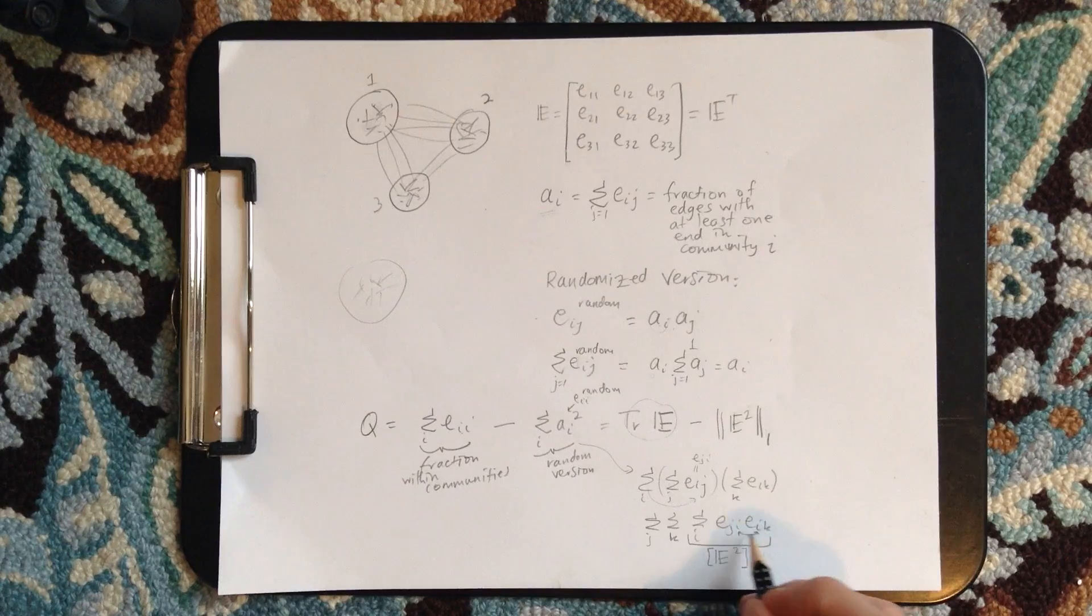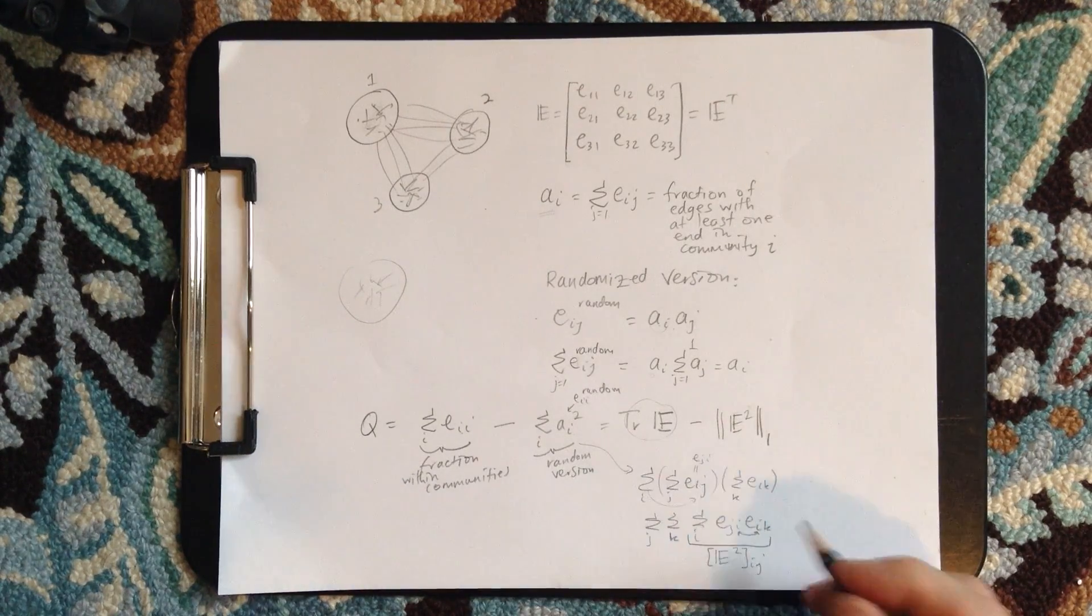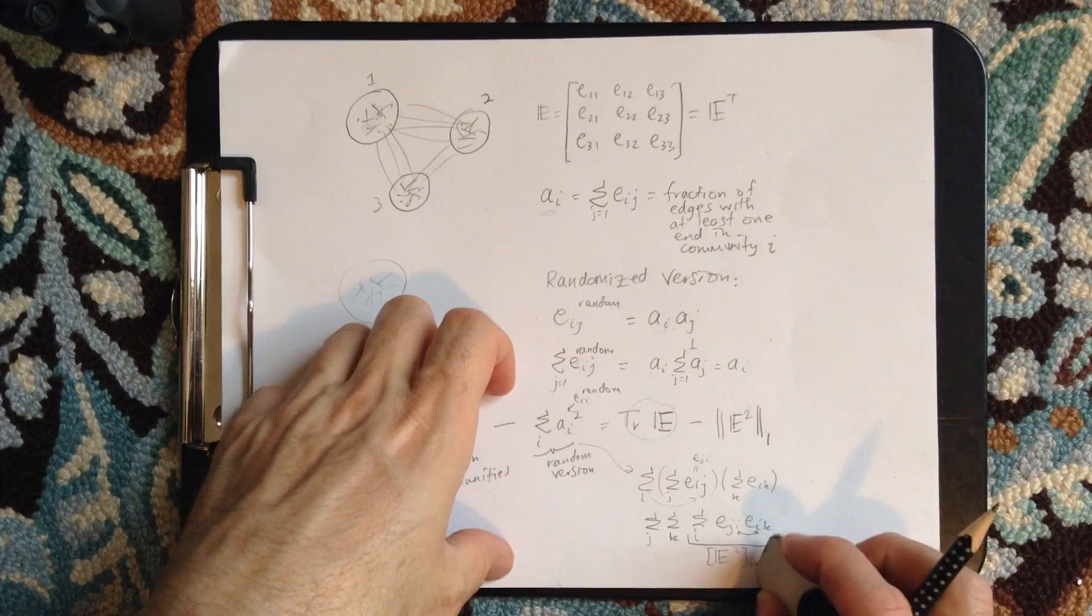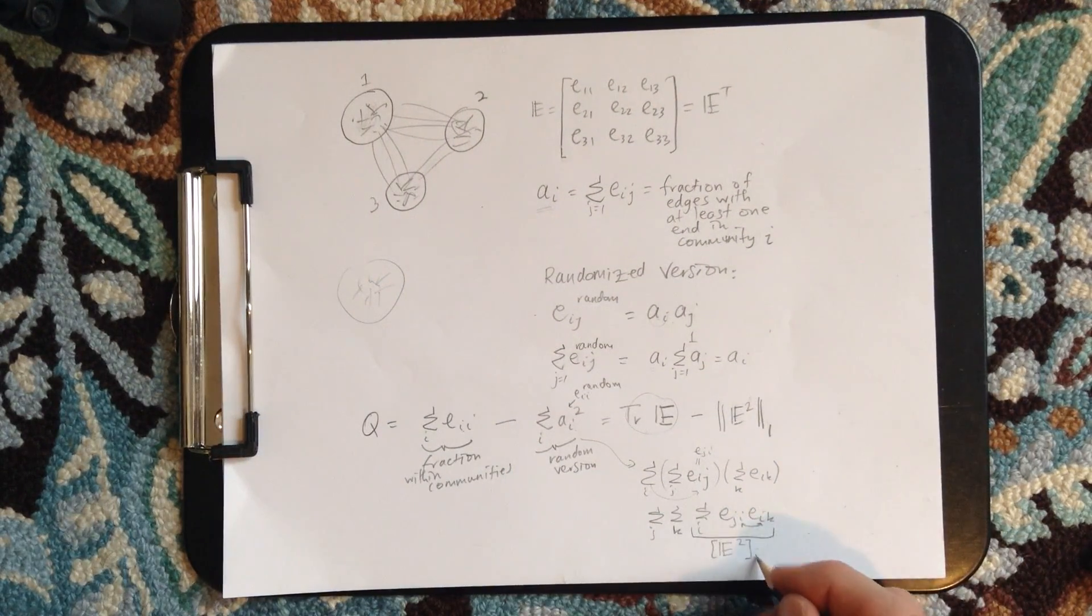And this piece here is the IJth entry in E squared. This is the definition of matrix multiplication, row, column. And then, oh sorry, that's the JKth entry. Right, JKth entry.